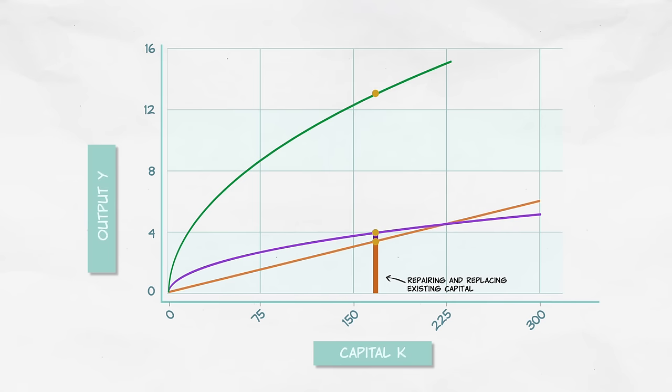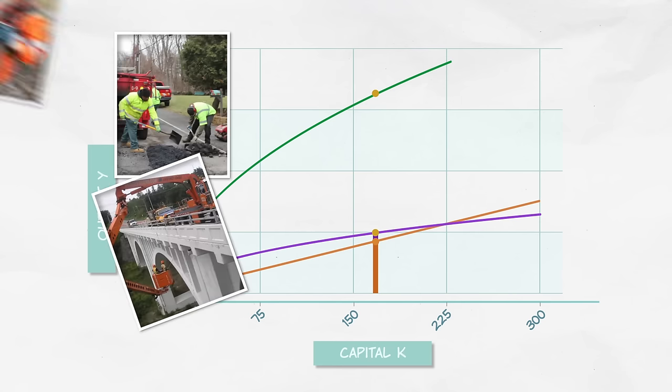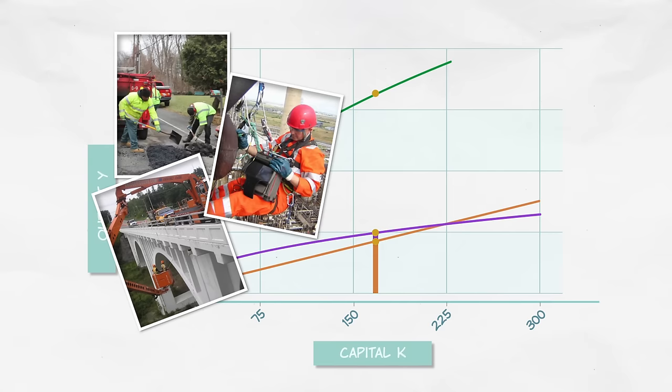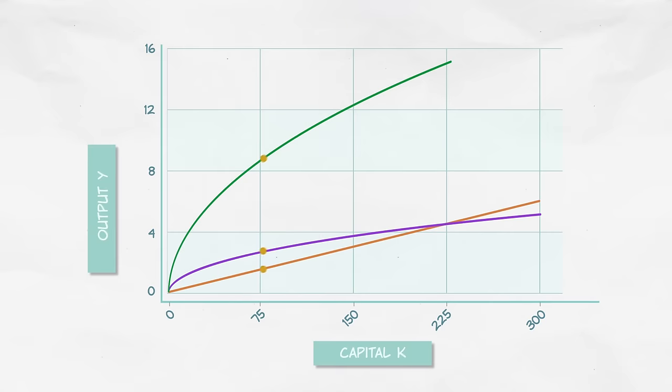A country with a lot of roads and bridges and factories is doing well, but it also has to invest a lot just to maintain all those roads and bridges and factories. And this is exactly what we saw in Germany and Japan after World War II. Growth rates started out very high, but as those countries caught up, growth rates declined.